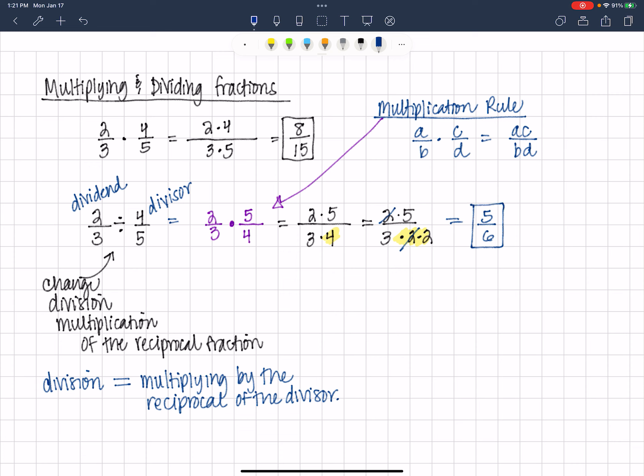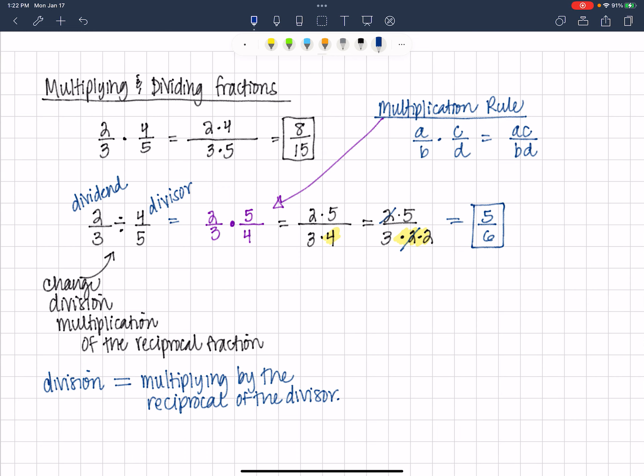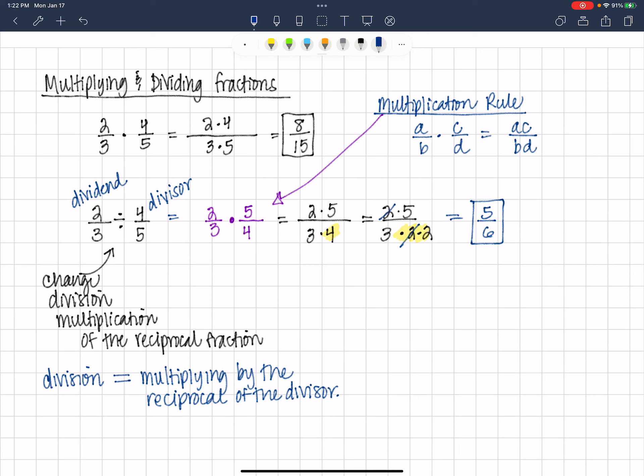Now, once again, you may be relying on some other rules that you've used in the past. As long as you understand what it is that you're doing, that's what's most important. And then, of course, getting the answer that I'm getting of 5 sixths.